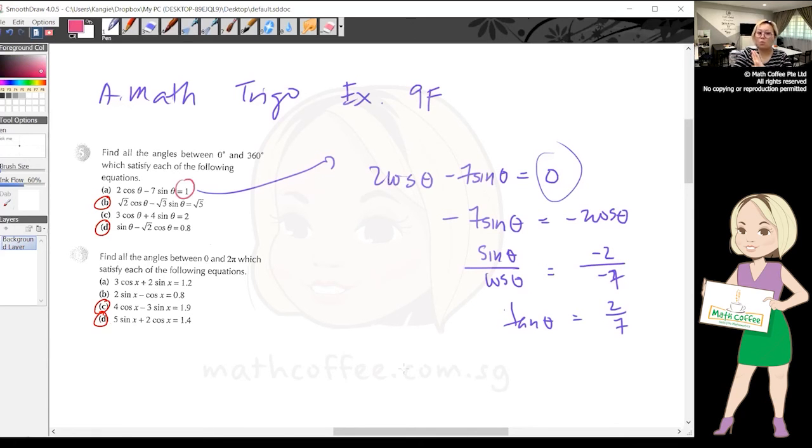But look at this question, this equals to 1. If it equals to 1, I cannot change it to tangent, right? So the only way to solve it is look at the left hand side - there is no cosine square or sine square, so I cannot use identity. The only way is to change it to single trig using R formula.